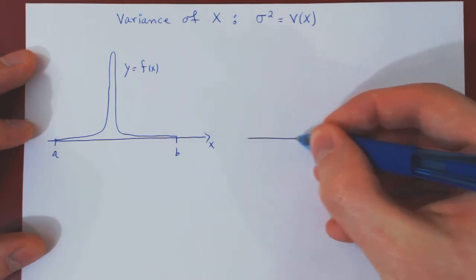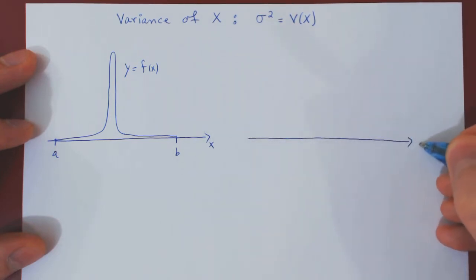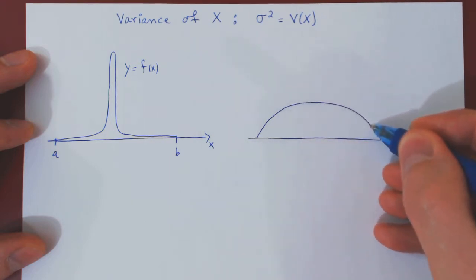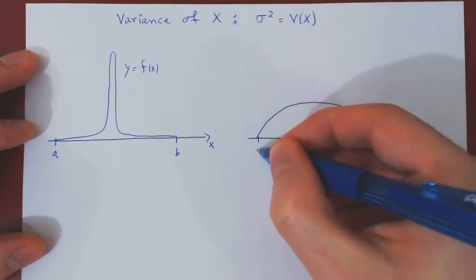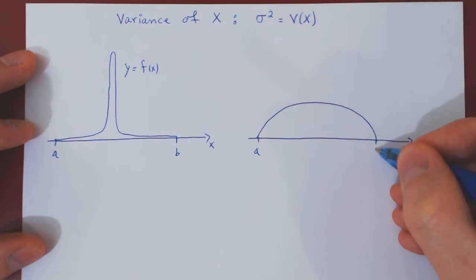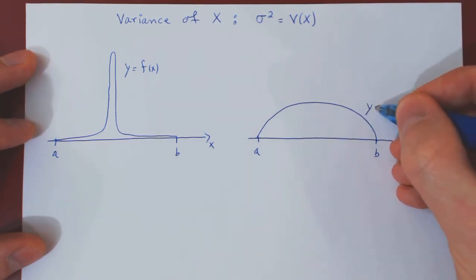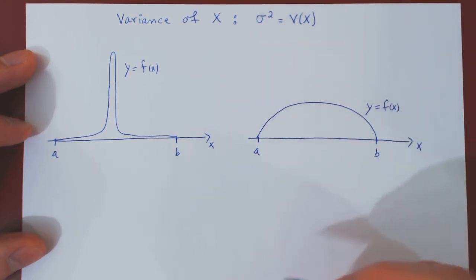Let's look at a second possibility. Assume we have the same range of X values from A to B, but now we have a very different probability density function for X.